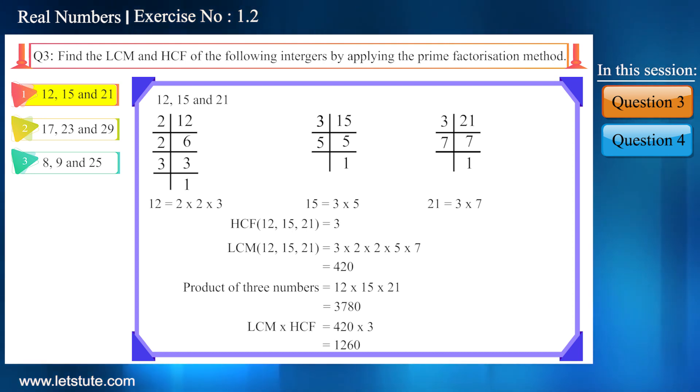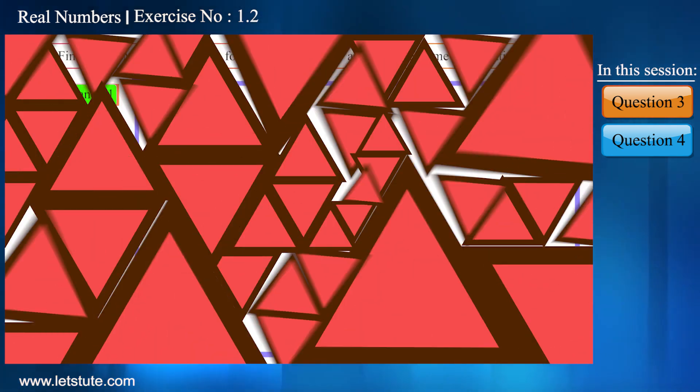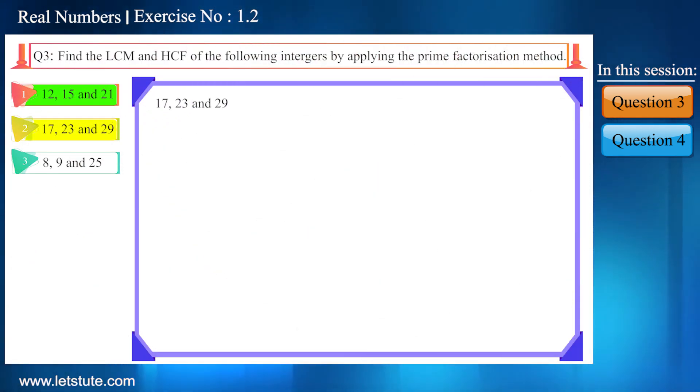And now let's multiply the HCF and LCM. We got 1260. That means this rule is not applicable for three numbers. Now moving further, let's take the second number: 17, 23, and 29. Friends, if you observe carefully, these three numbers are prime numbers.